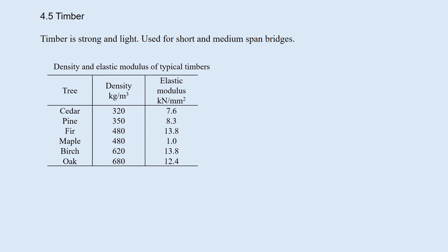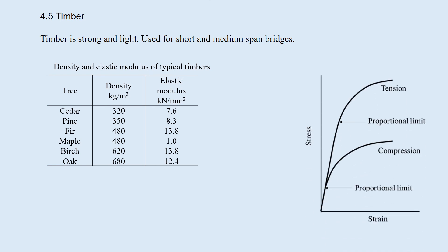Densities and elastic modulus of some timbers are shown in this table. A typical stress-strain relation is shown in this figure. Tensile strength is larger than compressive strength.